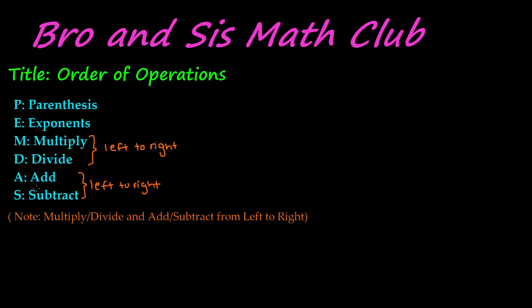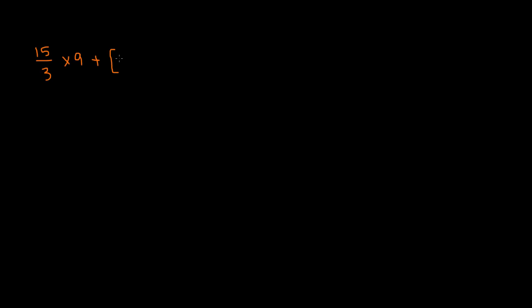So now let's go ahead and do an example. Let's say that we have 15 divided by 3 times 9 plus, and then brackets — I'll call these brackets — so we have in brackets 3, minus, and then in parentheses, the round type, we have negative 2, and then we close the parentheses and close the brackets, and then we have minus 8. So we see that we have two pairs of parentheses: the rectangular ones I'm calling brackets, and the round ones parentheses.